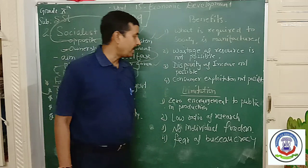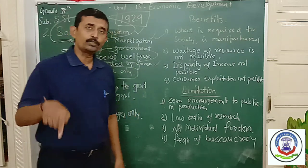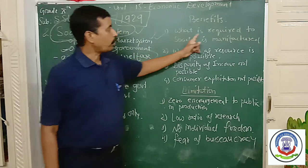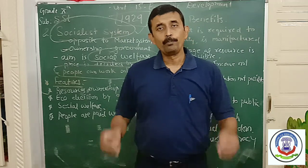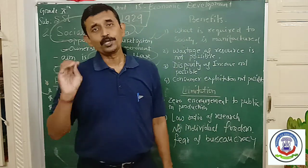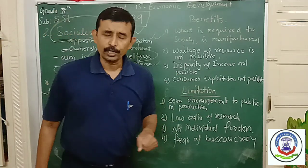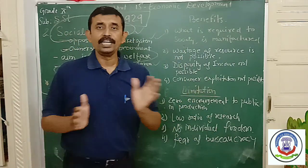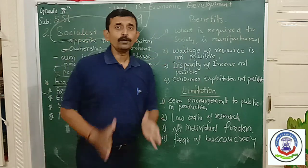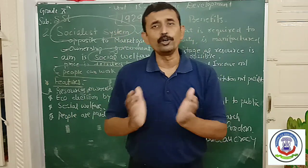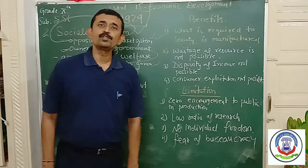Now let us focus on the benefits. Why did Russia and China adopt socialistic economy? The first benefit is that what is required by society is manufactured. The government produces goods as per the need of the society. If there is a demand for food grain, the entire focus will be on the production of food grain. If there is a demand for clothes, all industries will produce clothes. Because of this, there is no scarcity of commodities in the market and everything is available at a very reasonable rate, so people can satisfy their wants very cheaply.